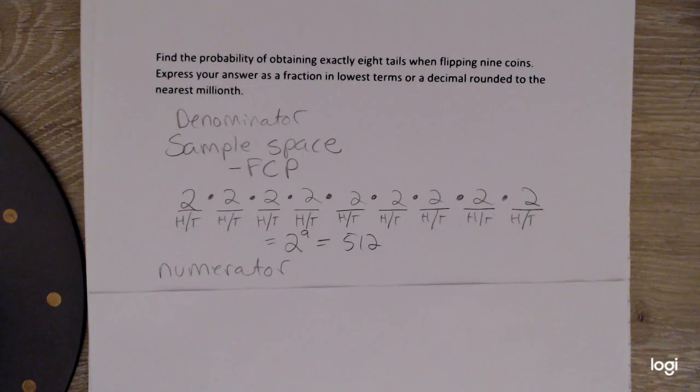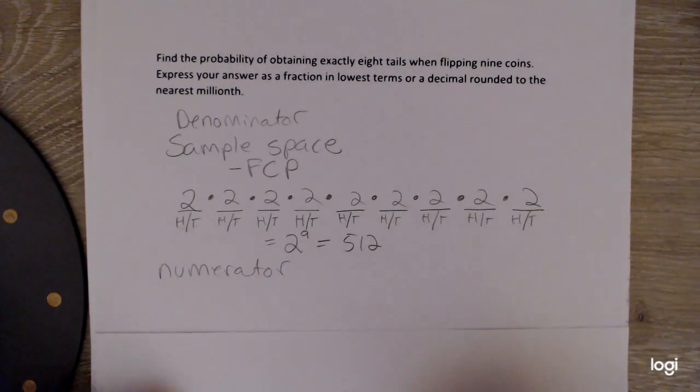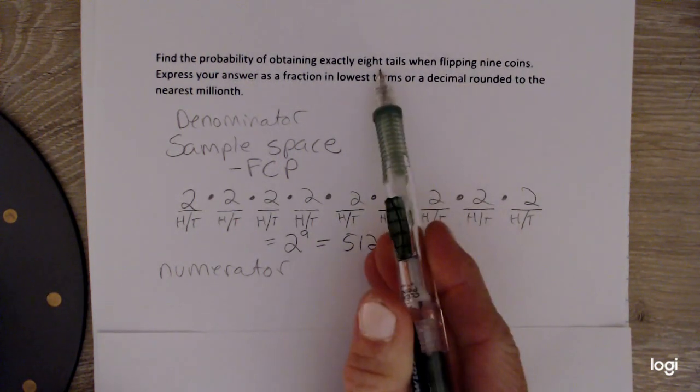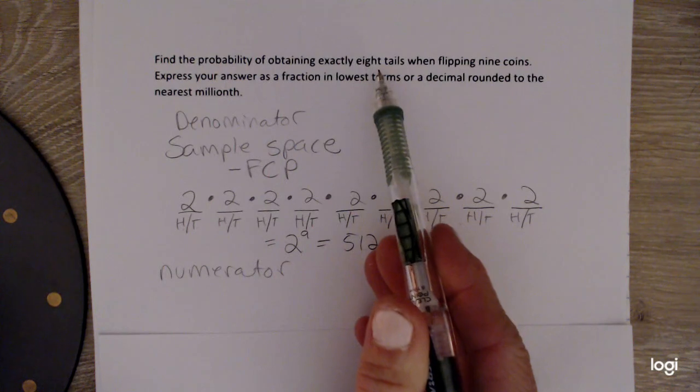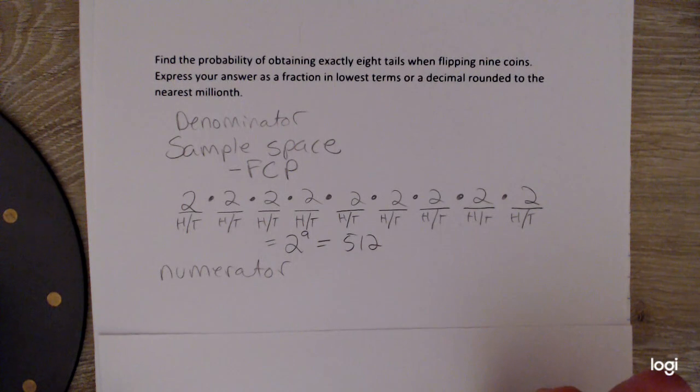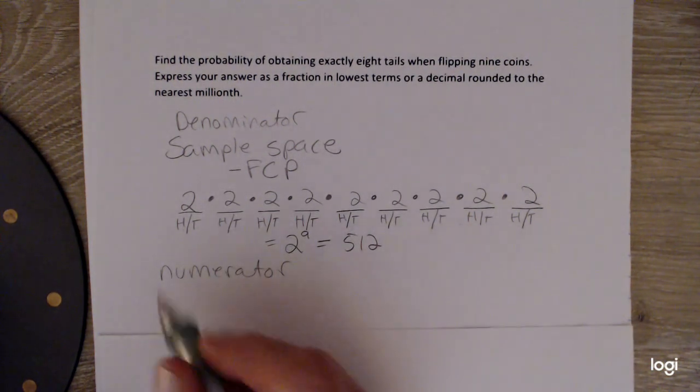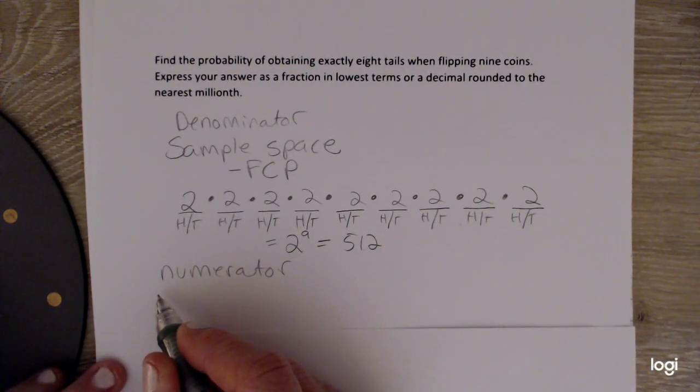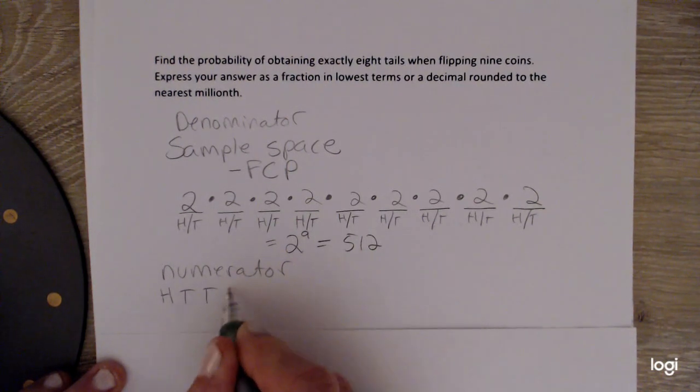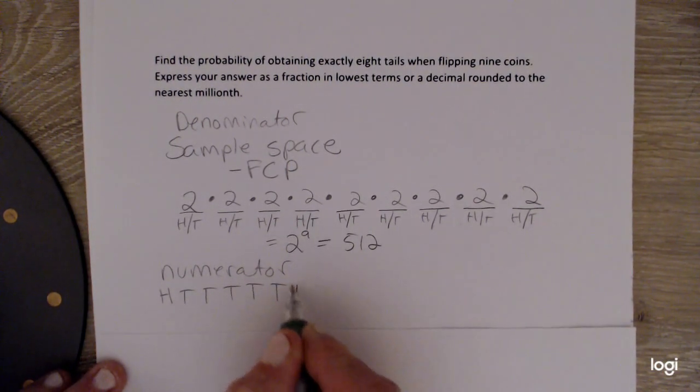So to find the numerator, and I'm sure there's more than one way to do this, but in finding the numerator and in looking at the problem, we're flipping a coin nine times, and we want exactly eight tails. So if we're flipping the coin nine times and eight of them are tails, one of them has to be a head. So one outcome we have for flipping the coin nine times would be that the first one is a head,